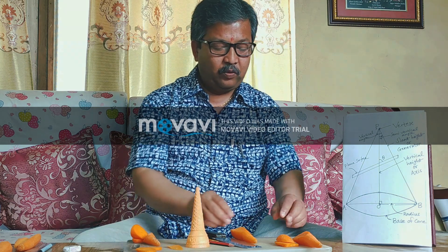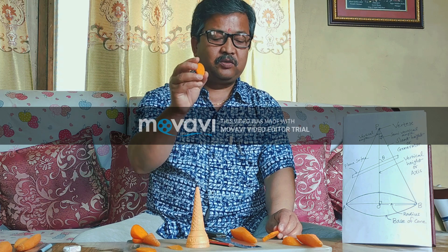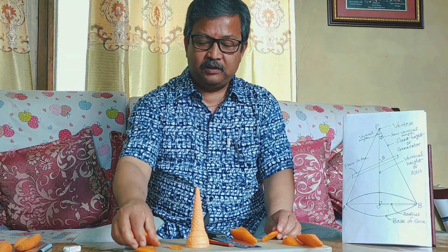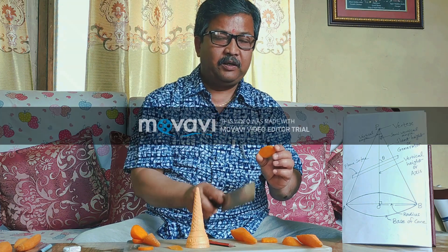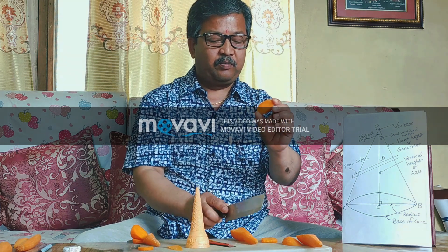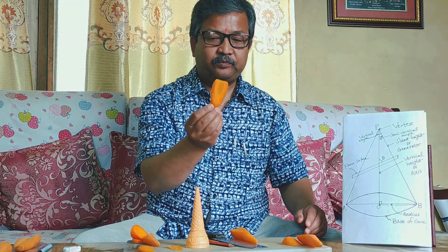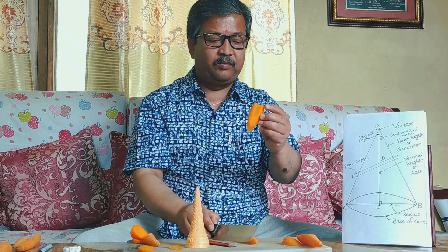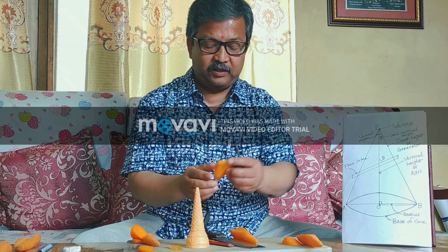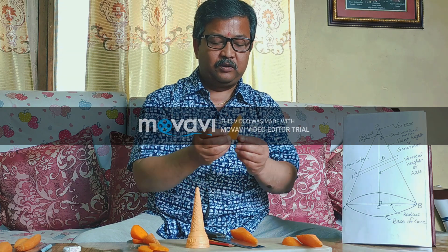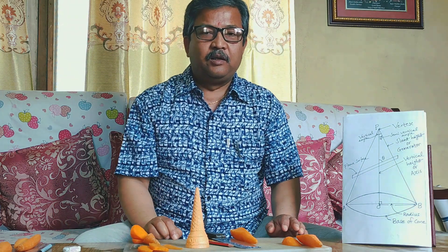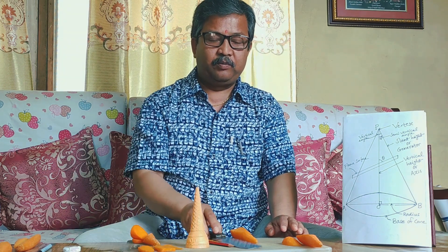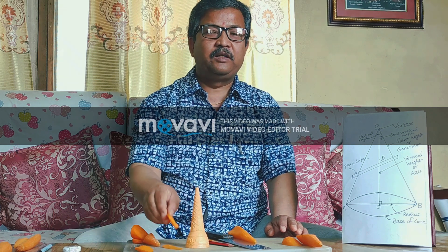In this way we get four shapes. First, the circle — obtained when the cone is cut by a plane parallel to the base. Second, the ellipse — obtained when the cone is cut by a plane not perpendicular to the vertical height and not parallel to the generator. Third, the parabola — obtained when the cone is cut by a plane parallel to the generator. Fourth, the hyperbola — obtained when the cone is cut by a plane parallel to the vertical height or axis. These different parts obtained by cutting the cone with a plane surface are known as conic sections. Thank you to all who watched this video.